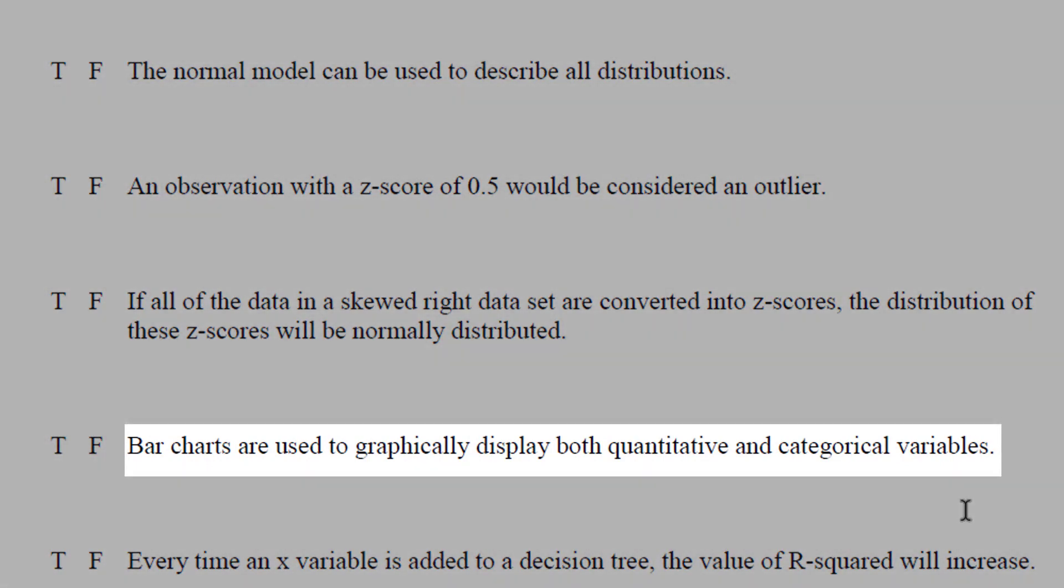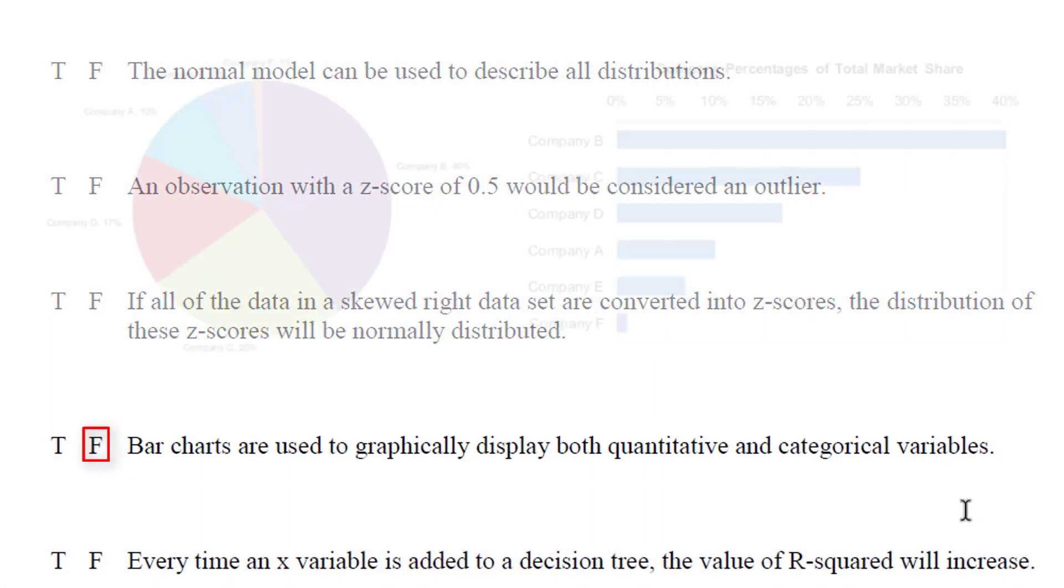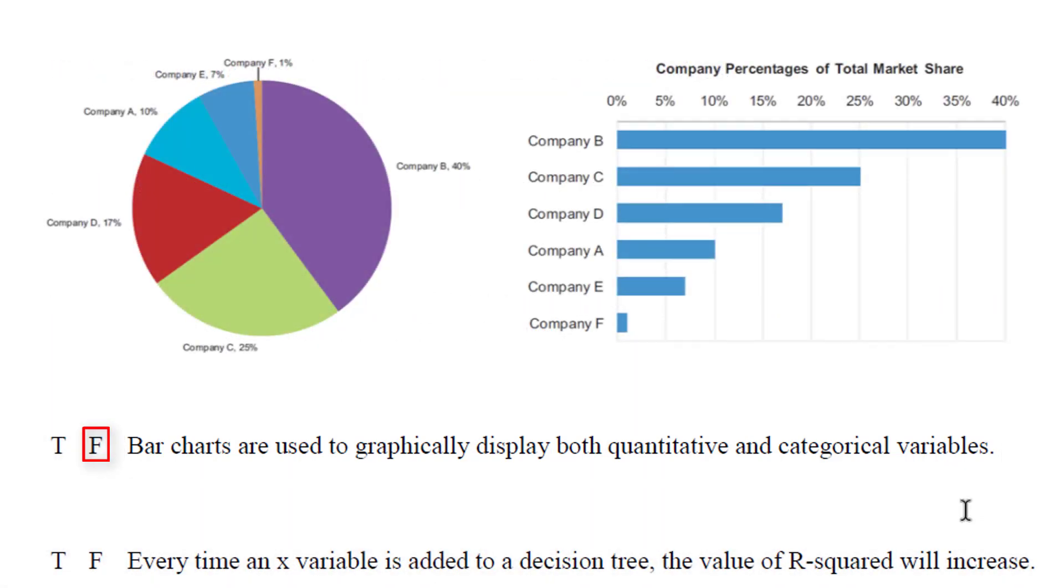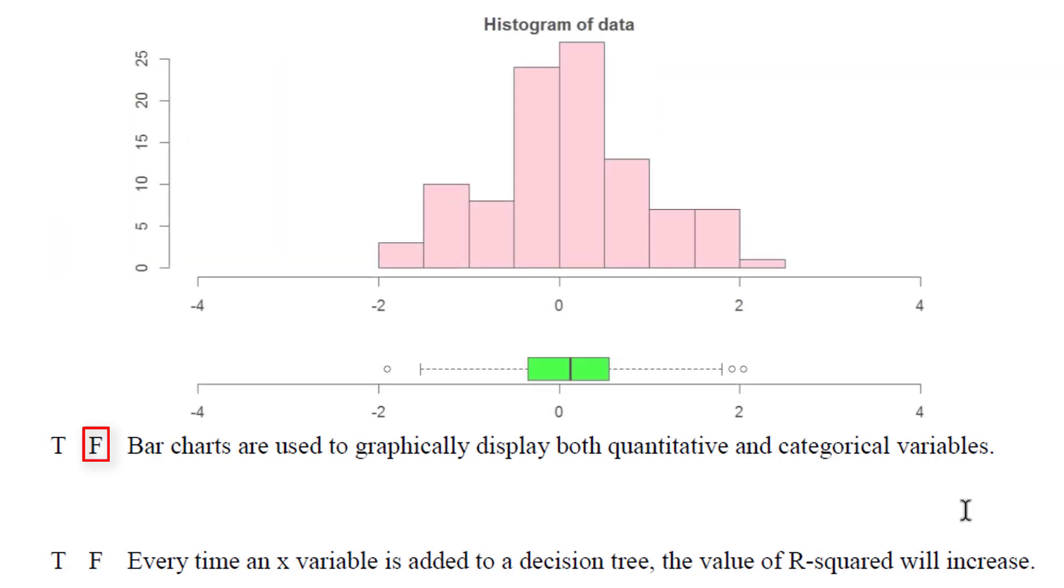Bar charts are used to graphically display both quantitative and categorical variables. This is definitely false, because bar charts and pie charts go together, and they are used to display categorical data. A bar chart is categorical univariate, and so is a pie chart. If we wanted to display a quantitative variable, we would need something like a histogram, a box plot, or a stem and leaf. We cannot display quantitative data in a bar chart.